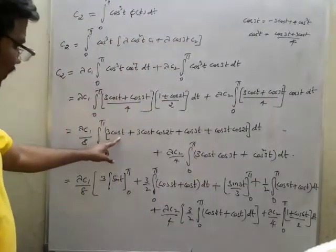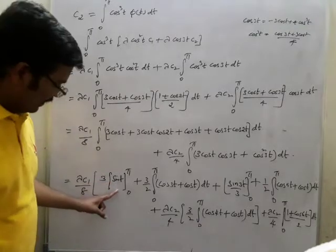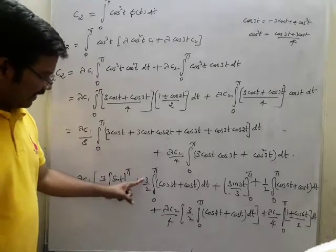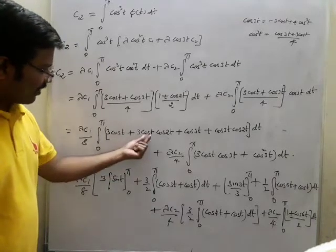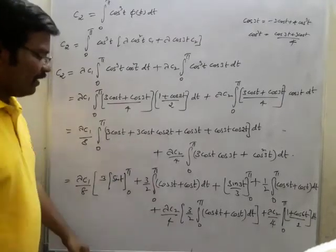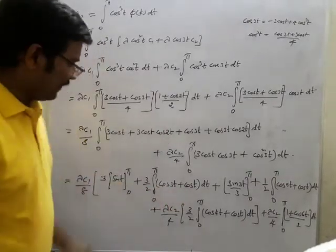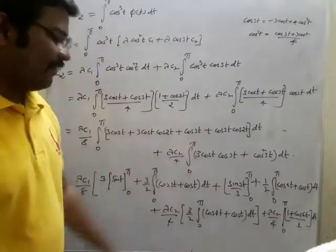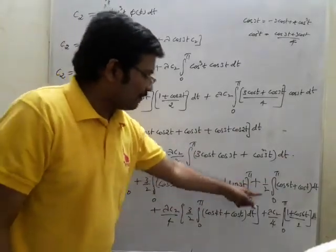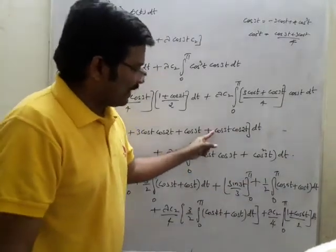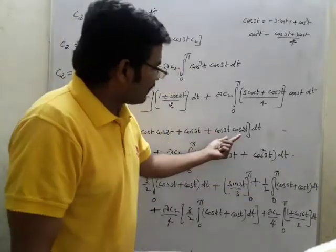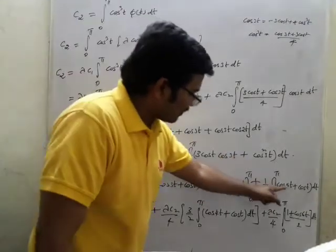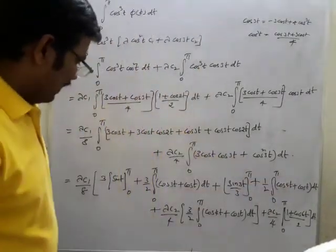This is again 3cos t; I have directly done sin t from 0 to π. Then multiplying and dividing by 2 gives 3/2 — using the identity 2cos(a)cos(b) = cos(a+b) + cos(a-b) — so this becomes cos(t)·cos(t) dt. Plus, I have directly done sin 3t by 3 from 0 to π. Then again multiplying and dividing by 2 gives 1/2, using 2cos(a)cos(b), so you get cos 5t + cos t.